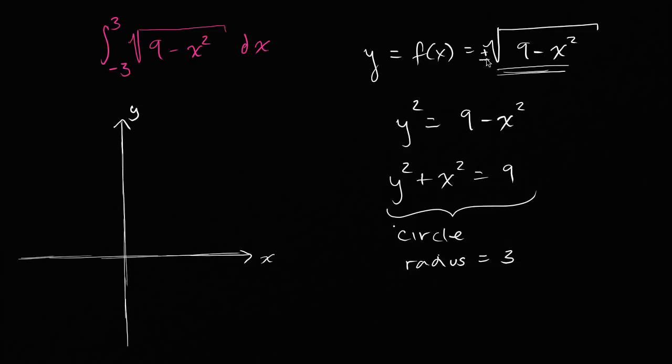But up here, we're only talking about the principal root. So when you're talking about the principal root, you're really talking about the top. This is the top of a circle centered at the origin with radius 3, because it's the positive square root. So let's draw that.